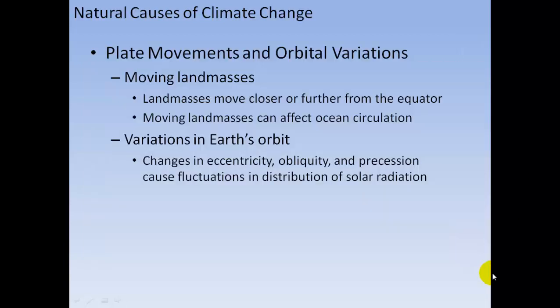Plate movements and orbital variations: moving land masses shift closer or farther from the equator and change climate. Moving land masses can also affect ocean circulation, which in turn changes climate. Variations in Earth's orbit — changes in eccentricity, obliquity, and precession — cause fluctuations in the distribution of solar radiation.